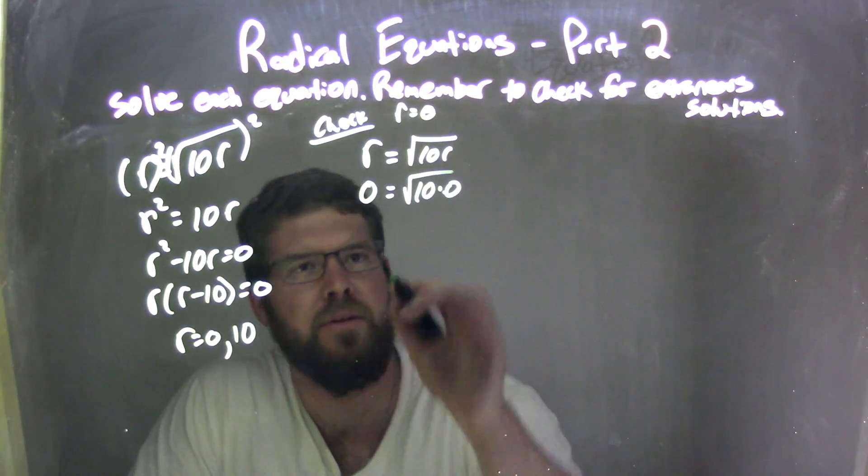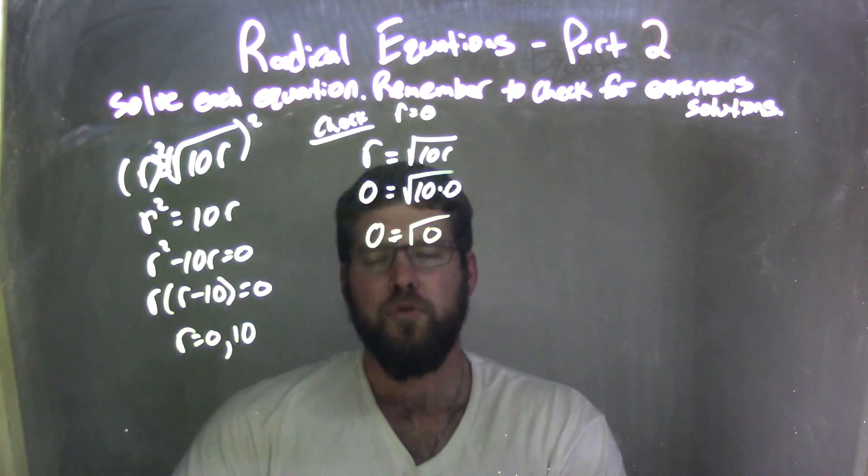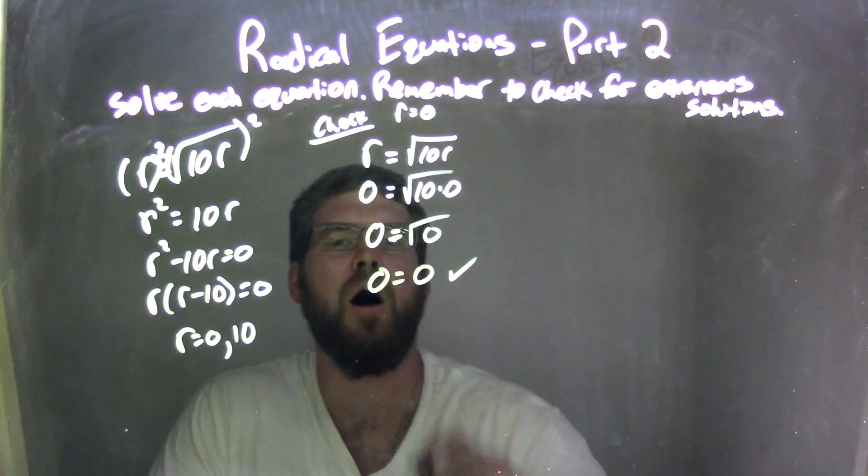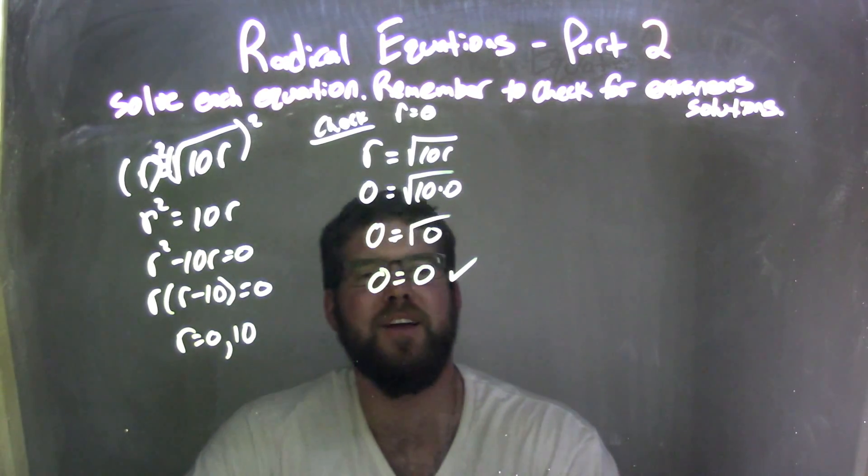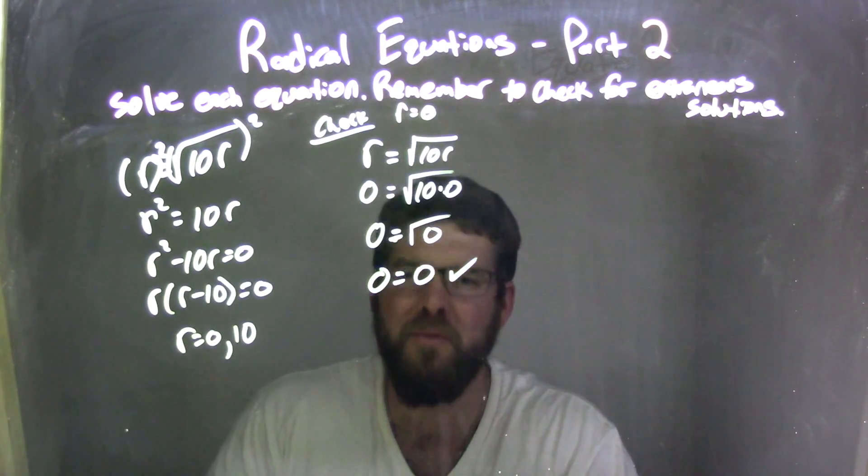Easy. 0 times anything is 0, so we have 0 equals 0, or square root of 0 equals 0. So left and right-hand side are equal, looking good. It means 0's a true solution, but we have two solutions we came up with, so we've got to check both of them.